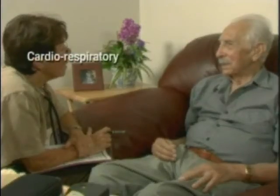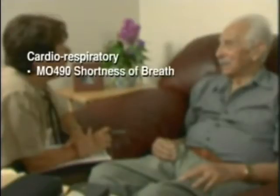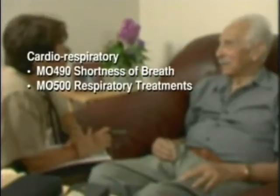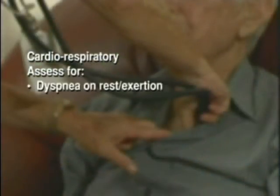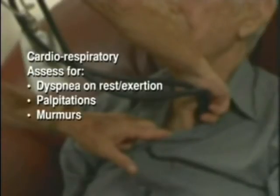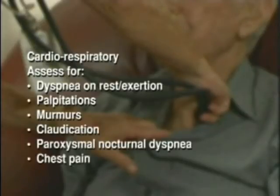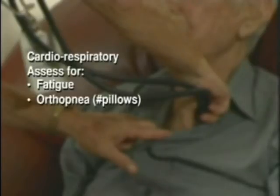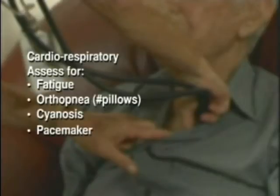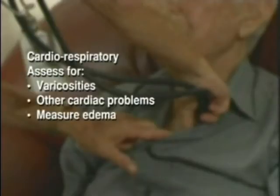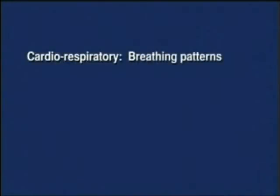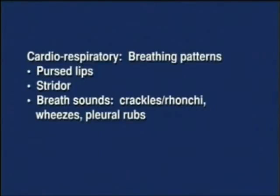OASIS item MU-490 requires documentation of when the patient is dyspneic or noticeably short of breath, and MU-500 asks what respiratory treatments are utilized at home, including oxygen, ventilators, or CPAP. Assess for dyspnea on rest, exertion, palpitations, murmurs, claudication, paroxysmal nocturnal dyspnea, chest pain, fatigue, orthopnea (document the number of pillows used), cyanosis, presence of a pacemaker, any varicosities, and other cardiac problems. Edema can be measured with a standard tape measure. In further assessing the patient's breath sounds, the clinician assesses whether there are stridor, crackles or rhonchi, wheezes, or pleural rubs heard on auscultation.